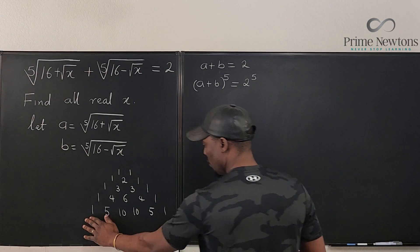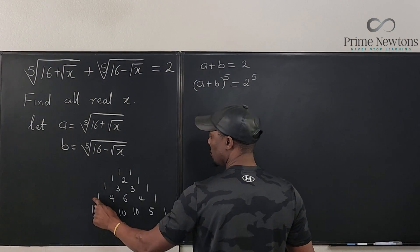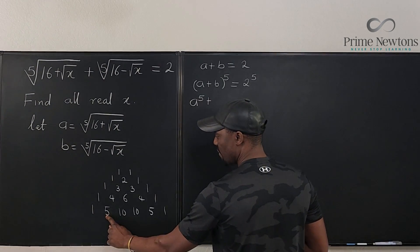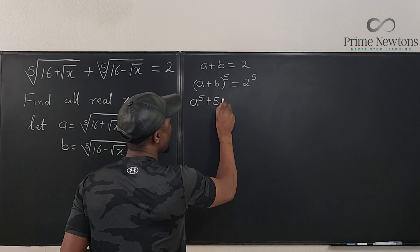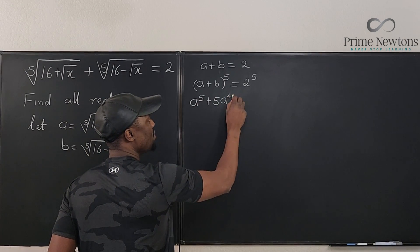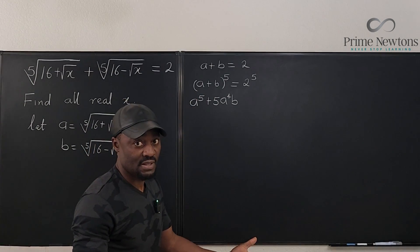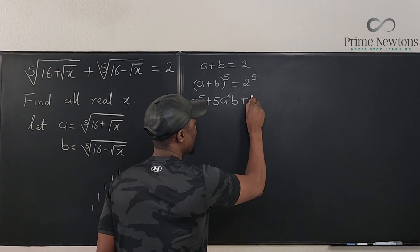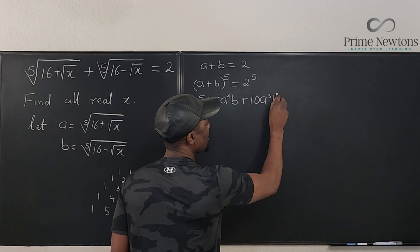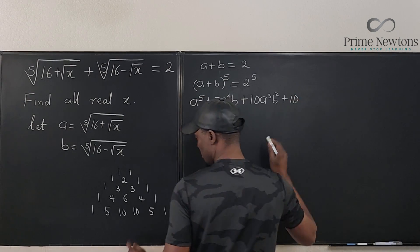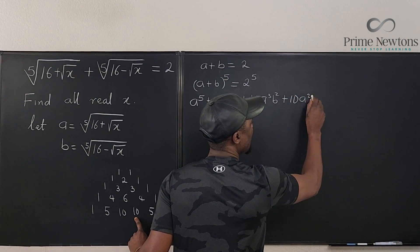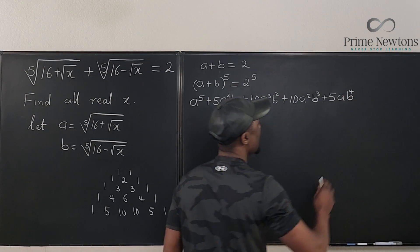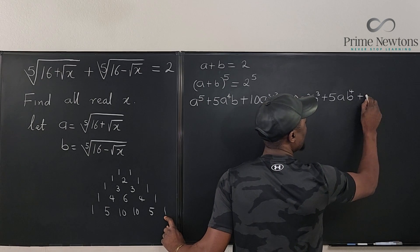So the expansion terms are: the first term is 1·a^5, the second term is 5·a^4·b (since the total exponent must be 5 each time), then 10·a^3·b^2, then 10·a^2·b^3, then 5·a·b^4, and finally 1·b^5. The right-hand side equals 32.